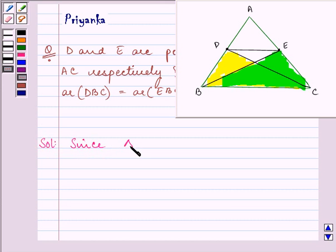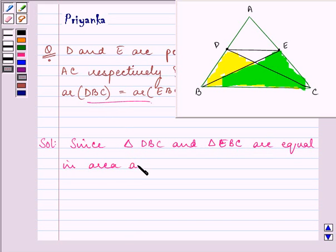Since triangle DBC and triangle EBC are equal in area, it is given to us that their areas are equal and have the same base that is BC.